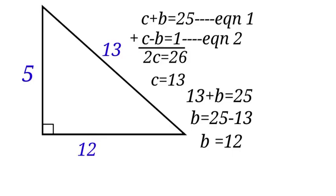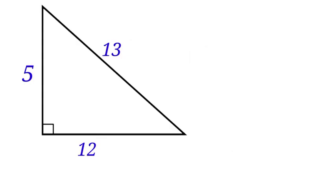We have gotten the value for c and b. So the perimeter of this triangle will be 5 + 12 + 13, which equals 30.